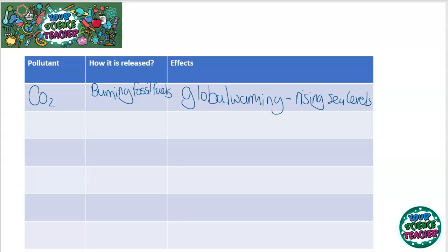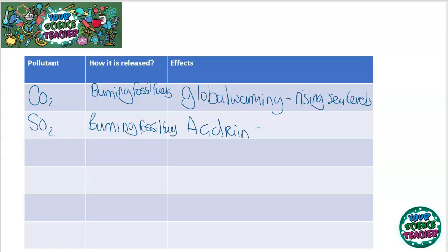Carbon dioxide isn't the only pollutant we put into our atmosphere when we burn fossil fuels. An example is sulfur dioxide, which is a massive problem because it causes acid rain. Acid rain has many effects on the environment: it causes the pH of soils to change, which can decimate forests, and it can also get into river ecosystems and change the pH of rivers, killing many fish.